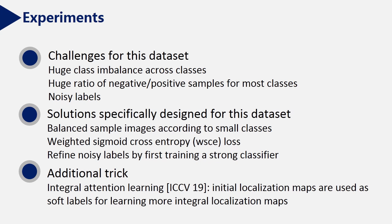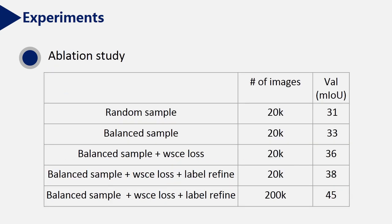That's to say, initial localization maps are used as soft labels for learning more integral localization maps. This is the ablation study. When adding more solutions, the performance of our method gets better and better, and we can reach 45 in validation set.